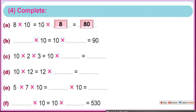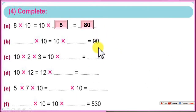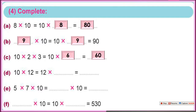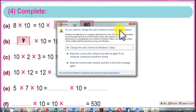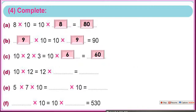Which number, when multiplied by 10, gives 90? Cancel the zero from the result — you get 9. So 9 times 10 equals 10 times 9 equals 90. For C: 10 times 2 times 3 — 2 times 3 equals 6, and 10 times 6 equals 60. For D: 10 times 12 equals 12 times 10 equals 120, because we add 0 to the right of the number. It's so easy.